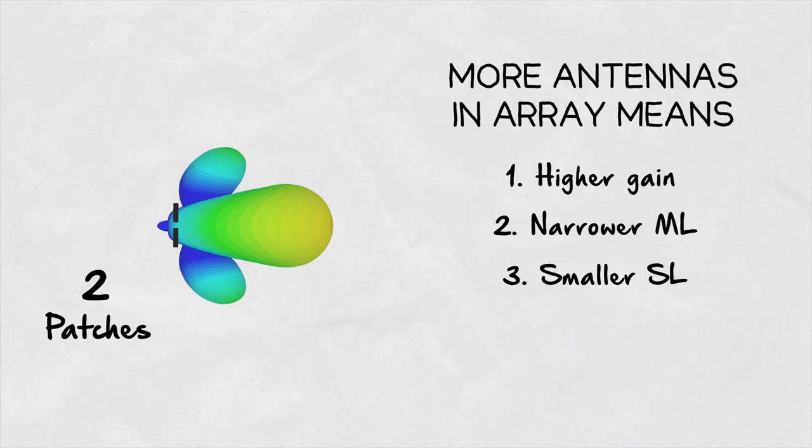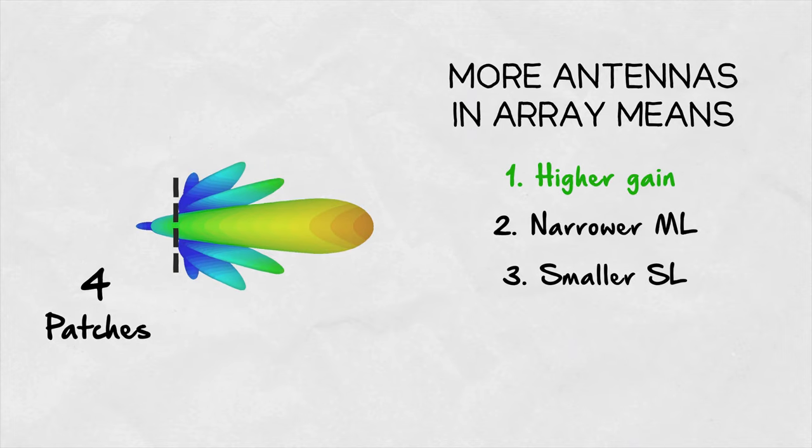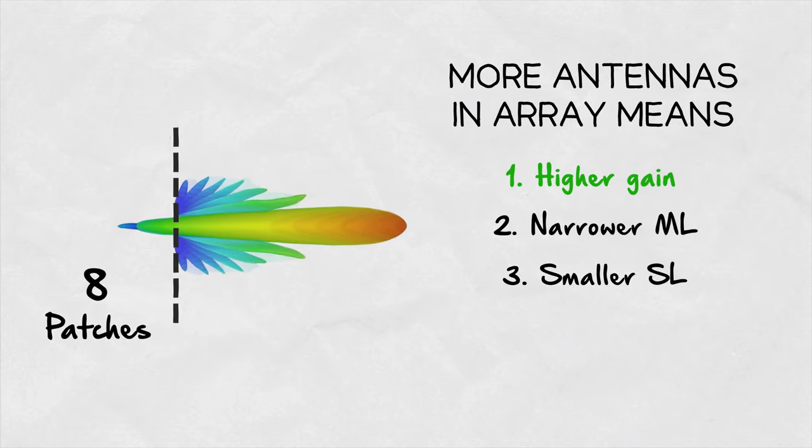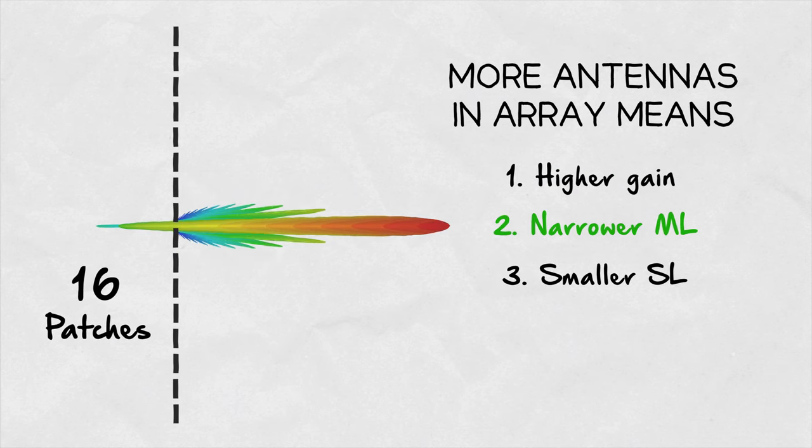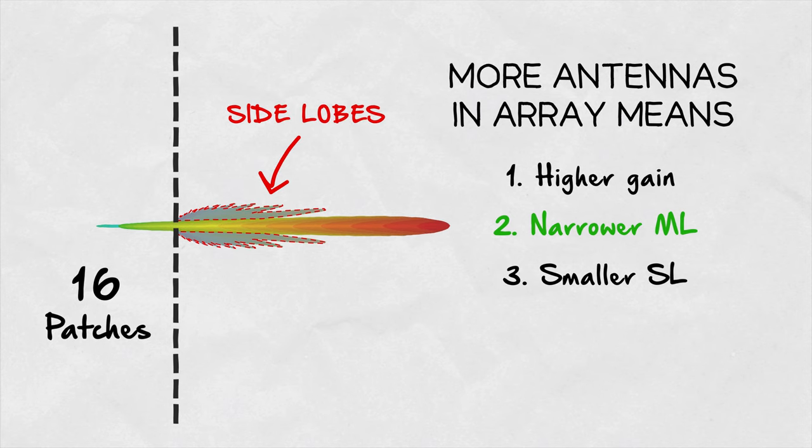The maxima and minima correspond to the lobes and nulls in the far-field radiation pattern. The more antennas in an array, the higher the resulting gain of the main lobe. At the same time, the beam width of the main lobe is decreasing. The weaker beams aimed in different directions than the main lobe are called side lobes and are generally undesired and shrink with the growing size of the array.